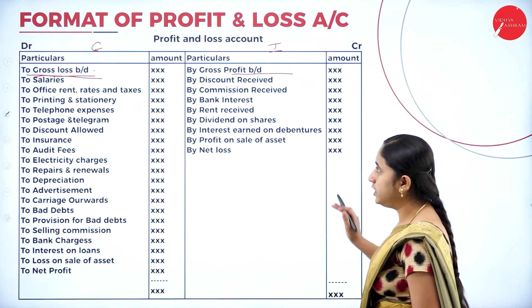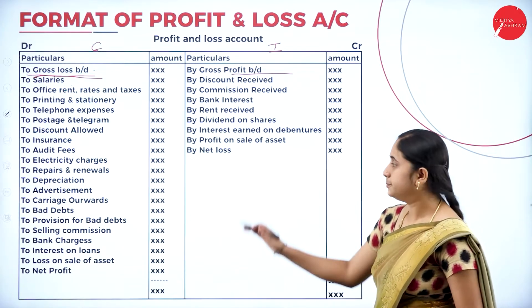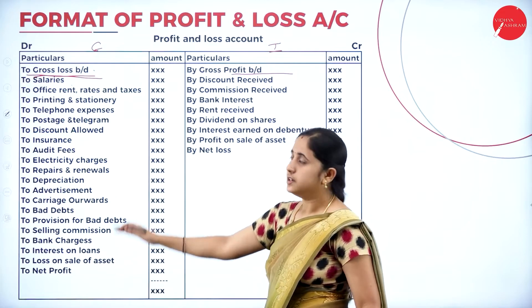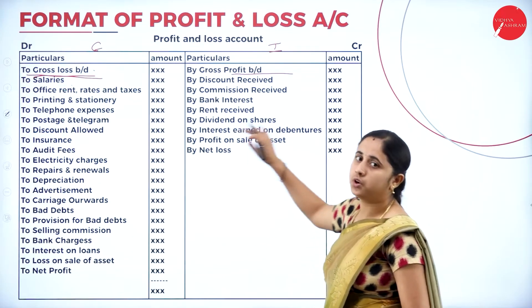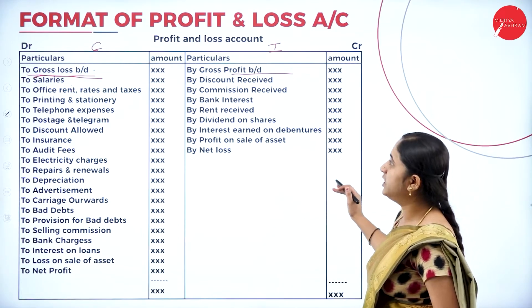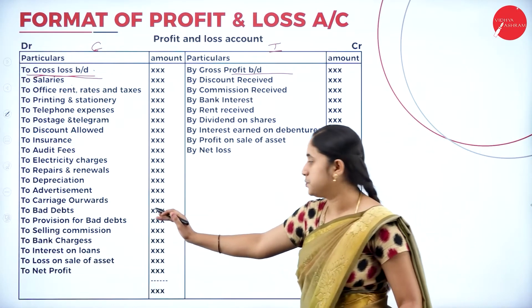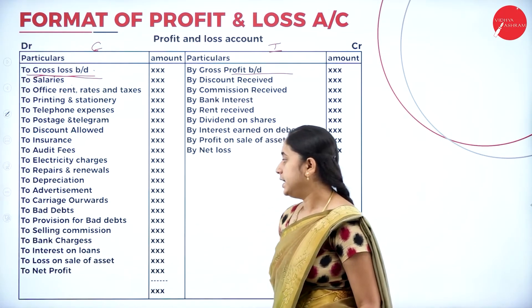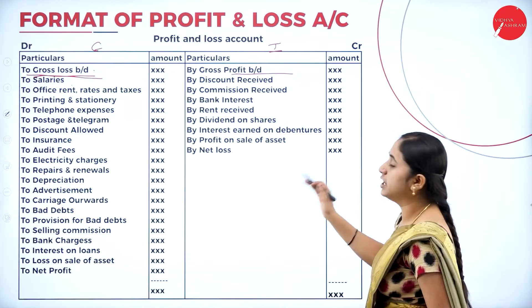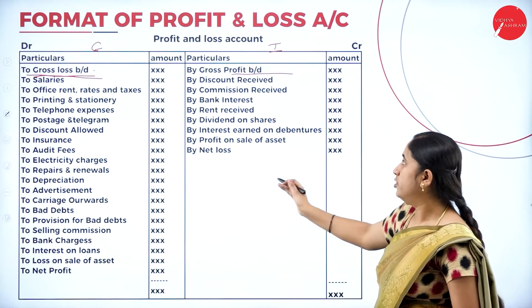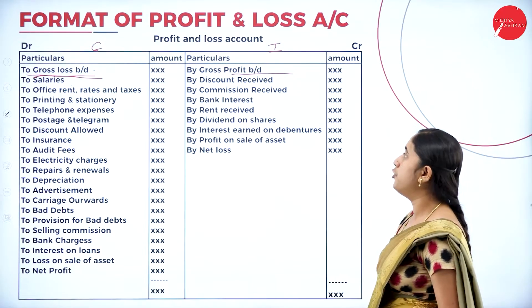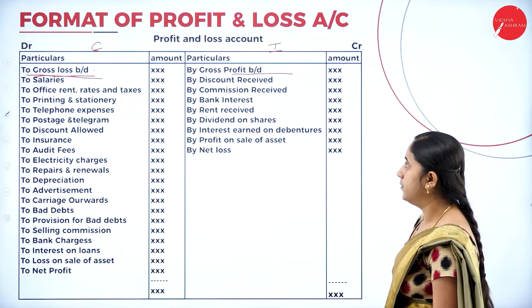After recording all the indirect income and expenses, make a total and find the difference. If expenses are more than income, it is a net loss. If income is more than expenses, it is a net profit. This is the format of the profit and loss account.